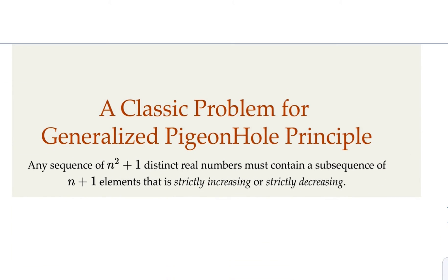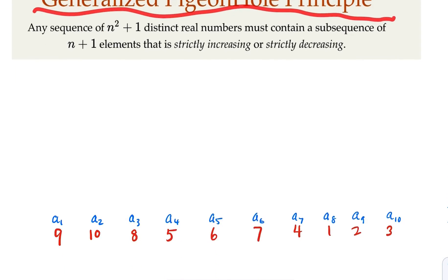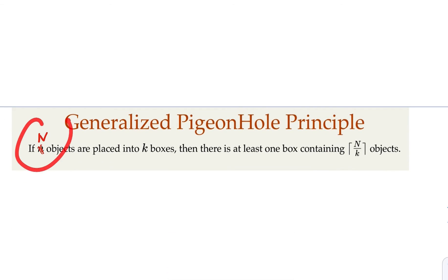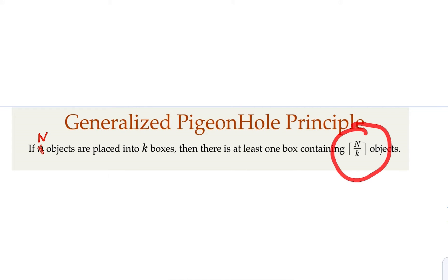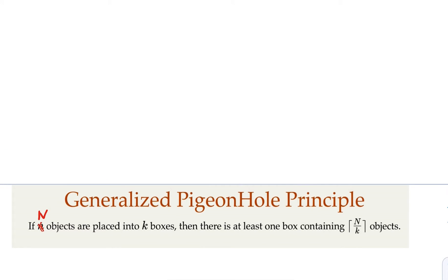The tool we're going to use is the generalized pigeonhole principle. It states: for N objects put into k boxes, some box must contain at least the ceiling of N over k objects. In our case, we have N equals 10 elements put into n equals 3 boxes. The ceiling of 10 over 3 equals 4, meaning one box must contain 4 or more elements.